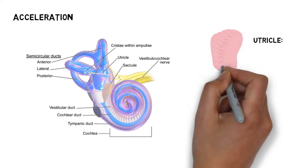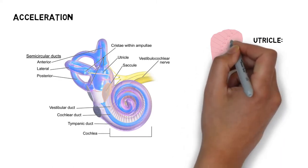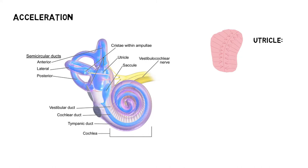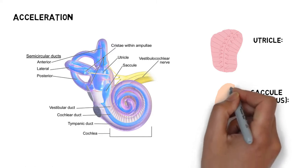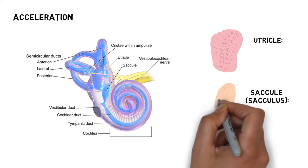The hair cells on either side of the striola are oriented toward each other, toward the striola. The utricle works in conjunction with the sacculus. The sacculus also has a striola, and here the hair cells are aligned opposing each other.